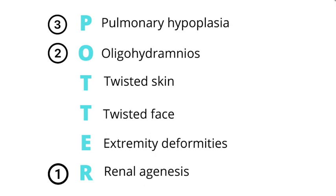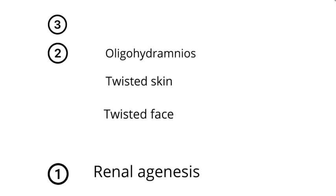Another high-yield association is the connection between pulmonary hypoplasia and Potter sequence. Potter sequence arises due to renal agenesis — the inciting or initial event — which causes decreased urination, making it a cause of oligohydramnios. This then leads to pulmonary hypoplasia. Other features of Potter sequence include twisted face, twisted skin, and extremity deformities, because amniotic fluid acts as a cushion for the baby, and when there is too little of it, those protective effects are lost.